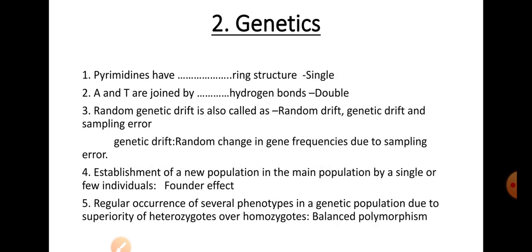In the genetics section, there are five questions. The first question: Pyrimidines have how many ring structures? The answer is a single ring structure. As you know, purines have a double ring structure and pyrimidines have a single ring structure. These are the basic backbones of DNA.